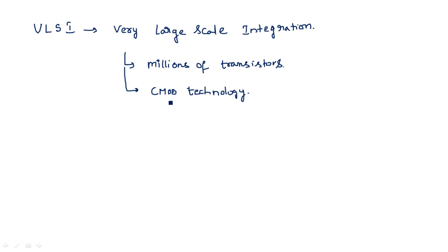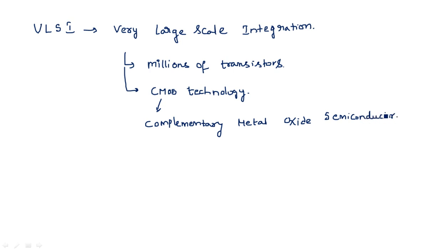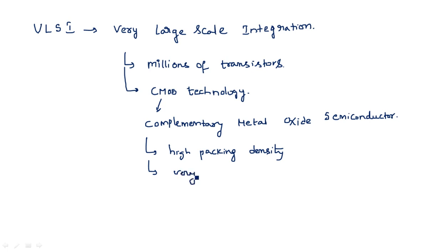CMOS stands for Complementary Metal Oxide Semiconductor. We are using this MOS technology for the fabrication of integrated circuits, inside which we are having multiple transistors. The advantages of MOS technology are: high packing density and very low power consumption.